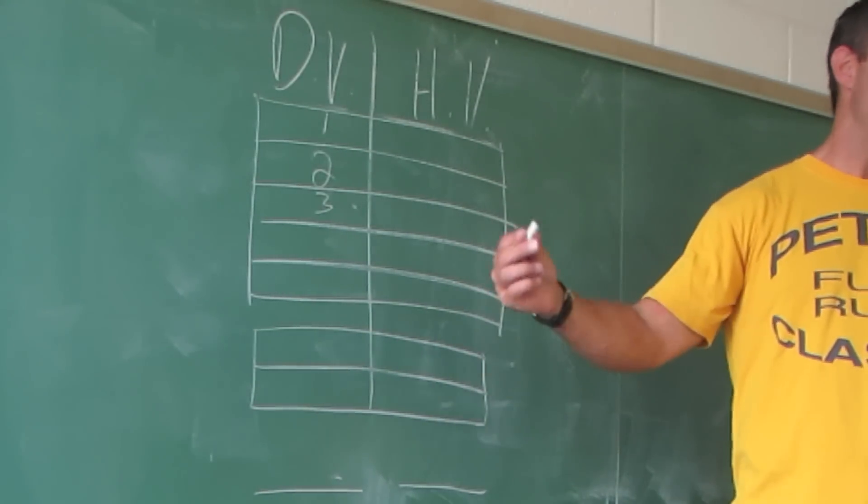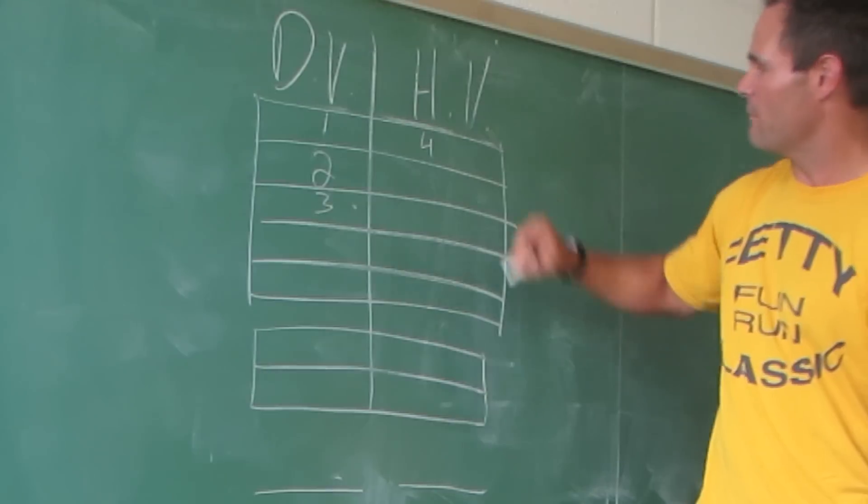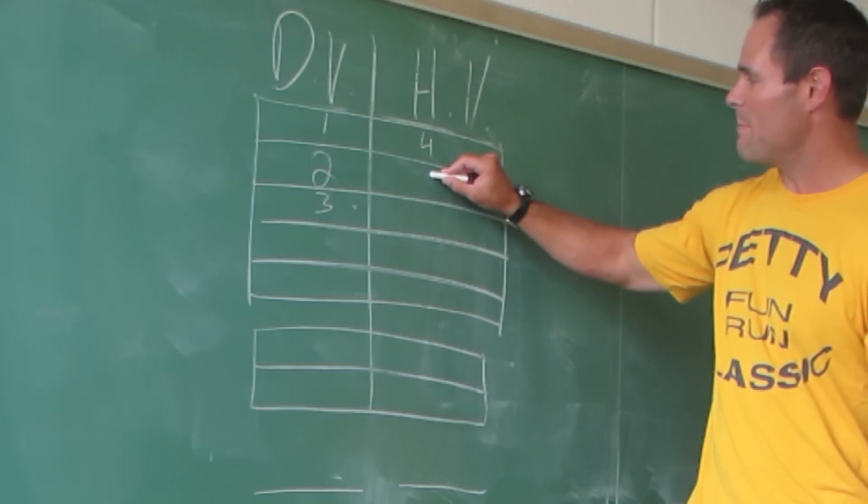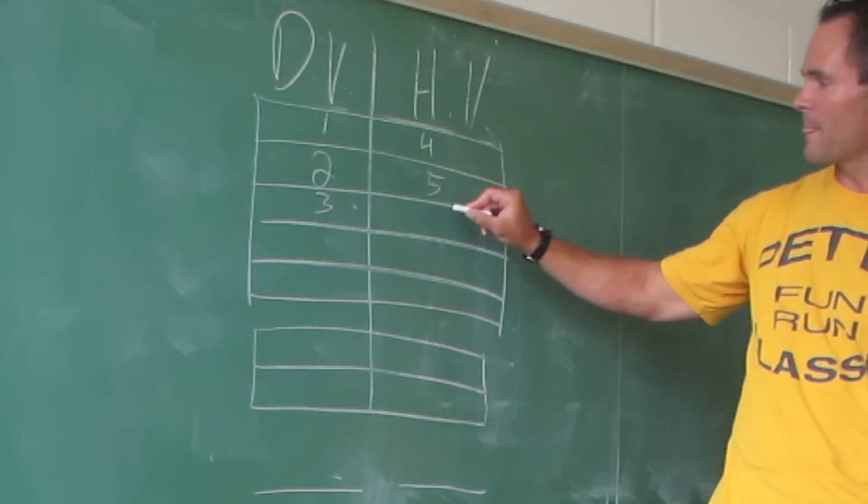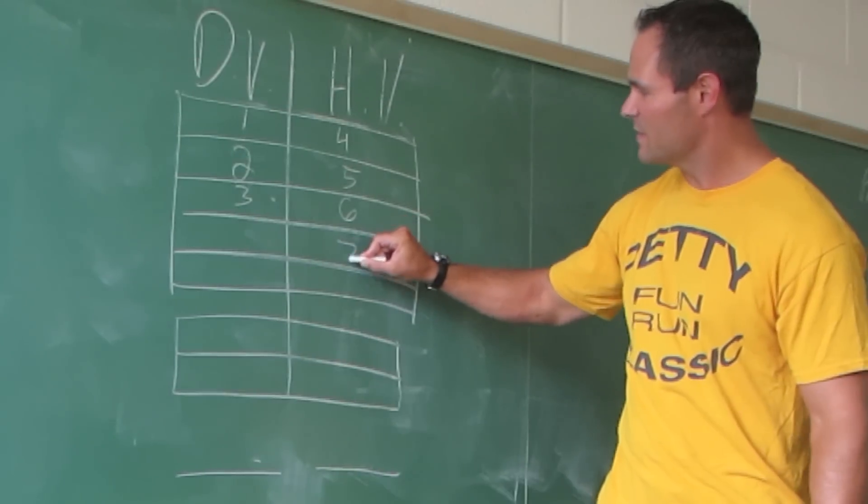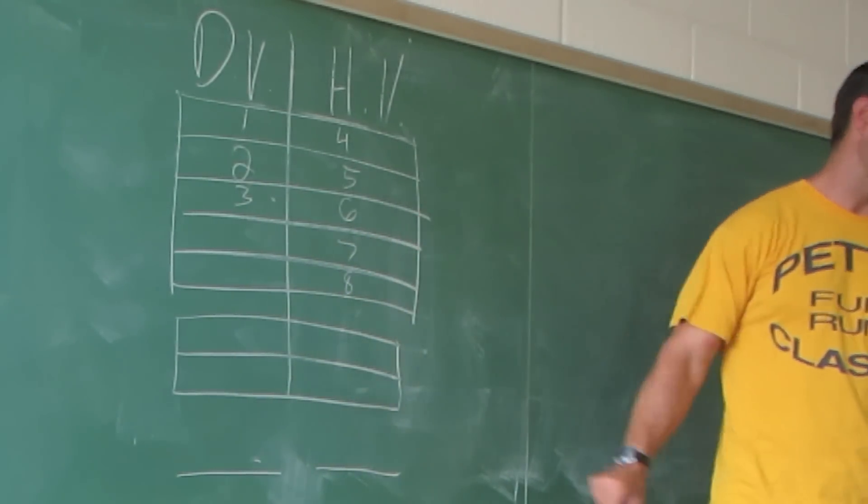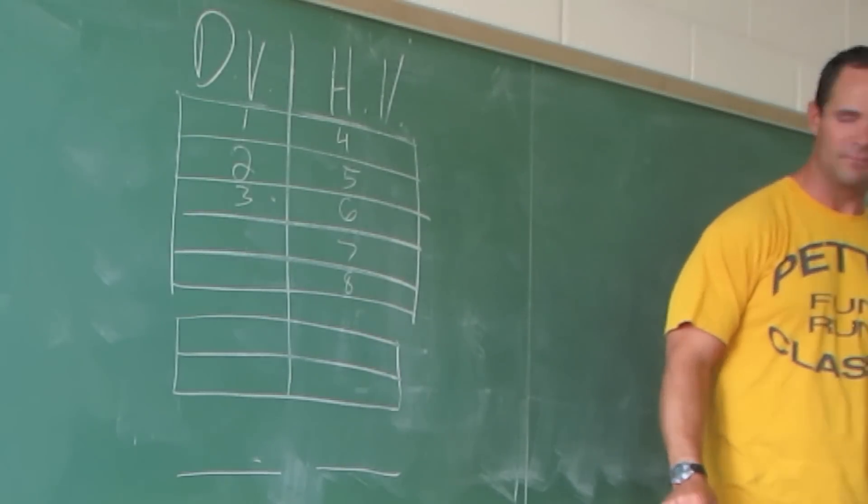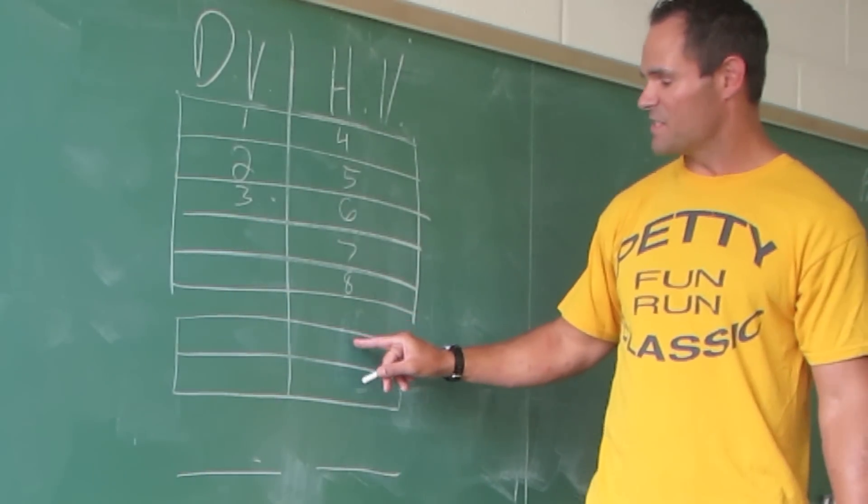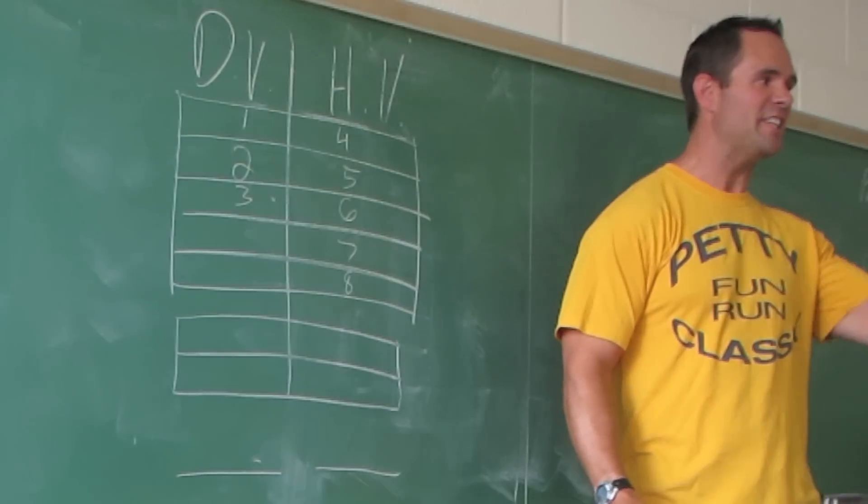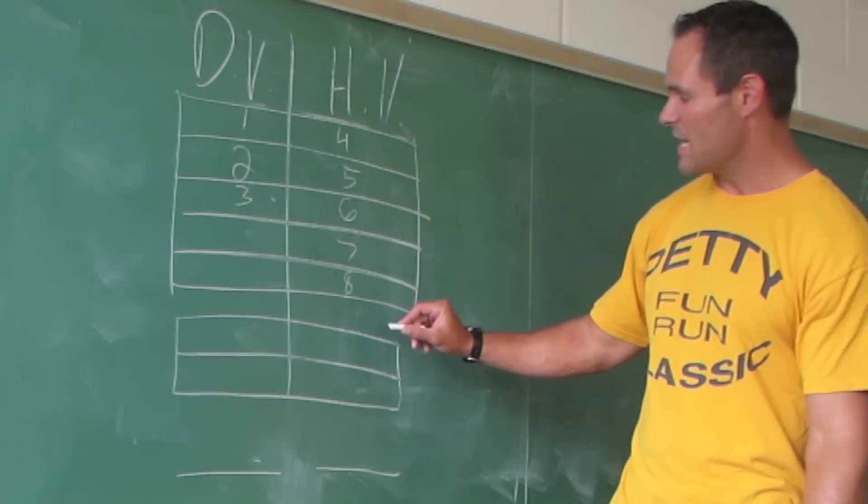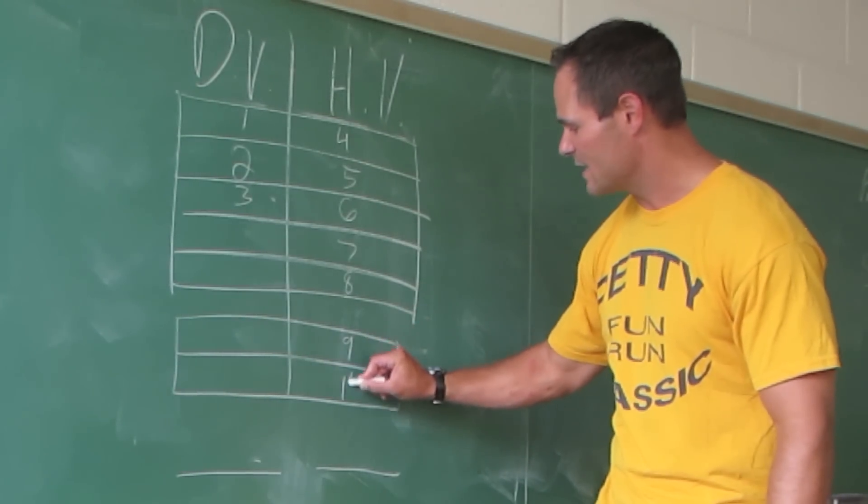Then the Happy Valley person comes in fourth. Then Happy Valley comes in fifth, then they come in sixth, seventh, and eighth. The top five girls score for a team. The sixth and seventh girls displace the other girls of a team. So then they get nine and ten.